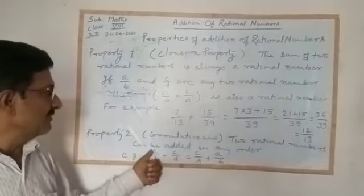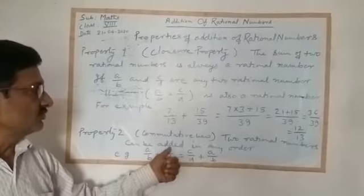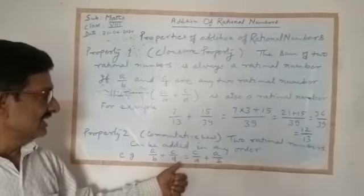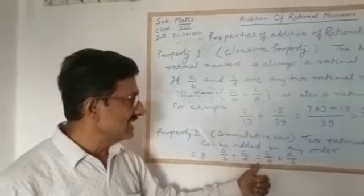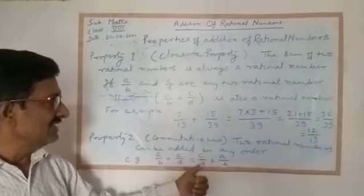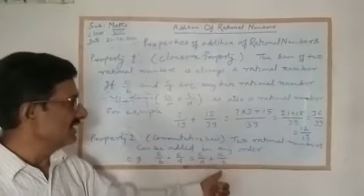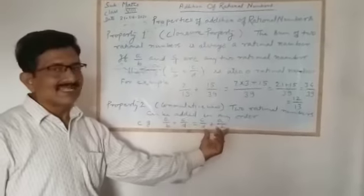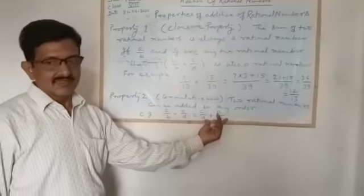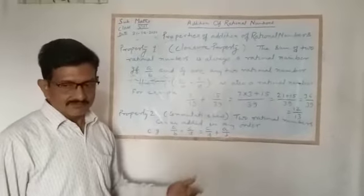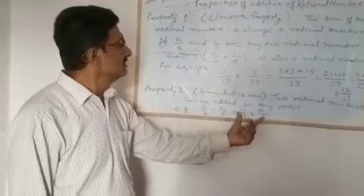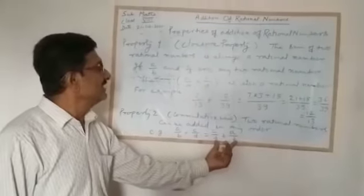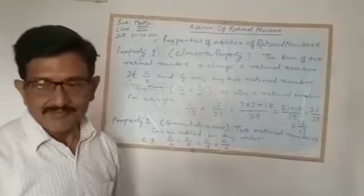For example, if a/b is added to c/d, this sum gives the same result as c/d plus a/b. Here the order is changed, but when we add both numbers in different order, we get the same result.